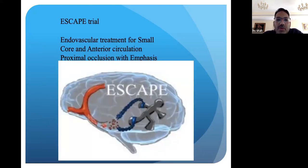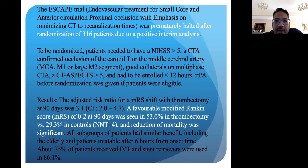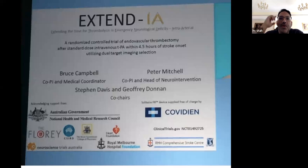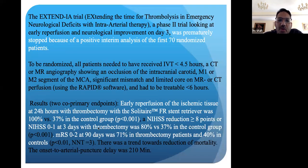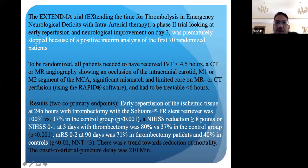The ESCAPE trial was also looking at anterior circulation occlusions and showed a favorable neurological outcome of 53% getting better in the thrombectomy group versus the control. Mortality was also very low. A third trial, also in 2014 — the EXTEND trial from Australia — did endovascular thrombectomy versus TPA. This trial was also ended early because thrombectomy patients were doing better at 71% compared to the control group at 40%. The trial was stopped prematurely because it was felt unethical to treat patients with the inferior treatment.